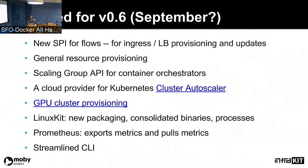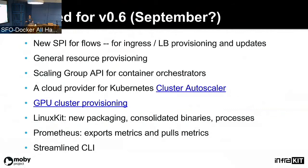A natural outcome of that is we will be able to implement a cloud provider implementation for the Kubernetes cluster autoscaler. That's a project that's been going on for a while within the Kubernetes community — it works in conjunction with the horizontal pod autoscaler to bring true elasticity to the cluster. Currently they only have a few implementations primarily focused on the public cloud, but because InfraKit works across all different environments from cloud to bare metal to virtualized environments like LibVirt and KVM, we think we have an opportunity to really help the community.